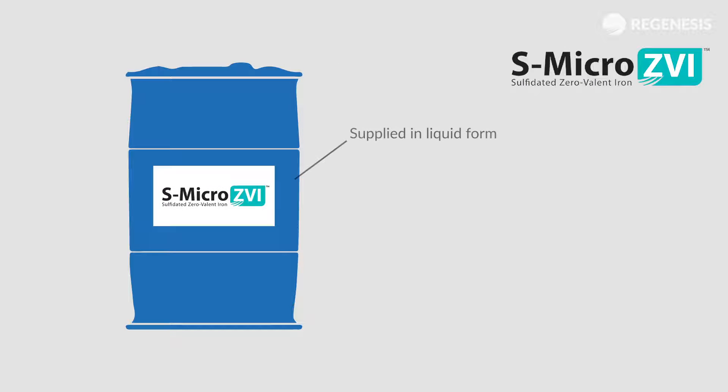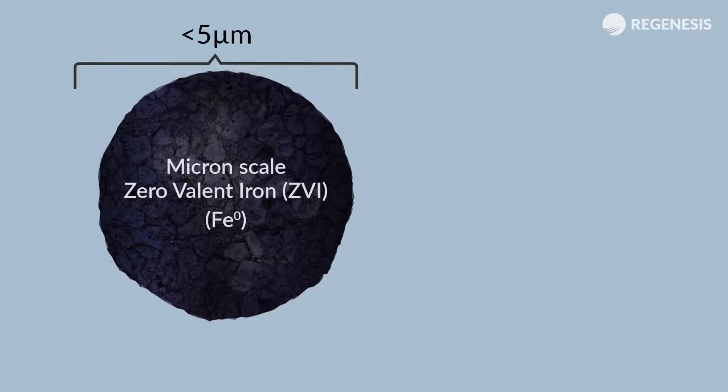S-Micro-ZVI from Regenesis is a powerful, sulfidated, micron-scale, zero-valent iron product designed to treat chlorinated contaminants.